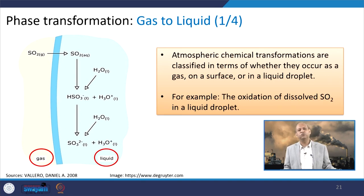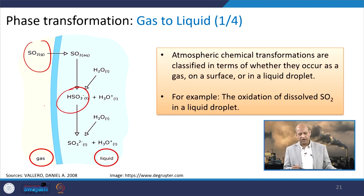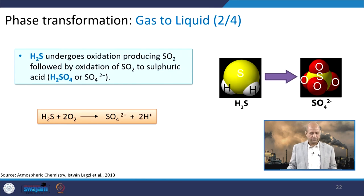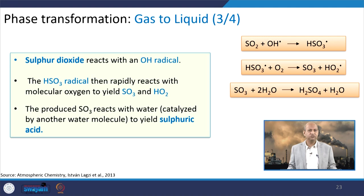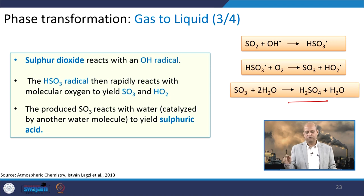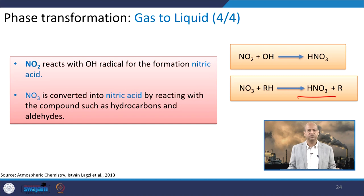The phase transformation now — gas to liquid. You can see here that SO2 is there and moisture is there. In the presence of moisture it can get converted into HSO3, ultimately getting converted into H2SO4. Here you can see H2SO4 production shown in the figure as well as in the reaction. This is the complete set of reactions where sulphur dioxide reacts with OH hydroxyl radicals, and HSO3 radicals then rapidly react with molecular oxygen to yield SO3 and HO2, and ultimately sulphuric acid is produced. Similarly, NO2 gets converted into HNO3. This is the same gas-to-liquid phase transformation of the pollutants.